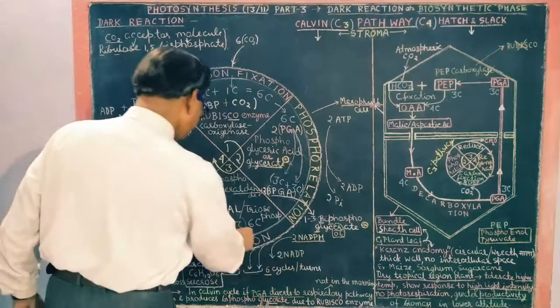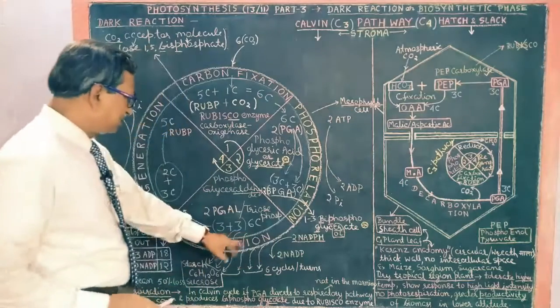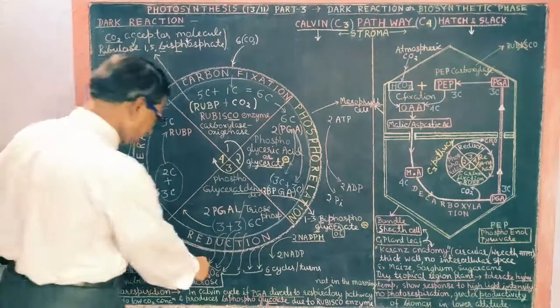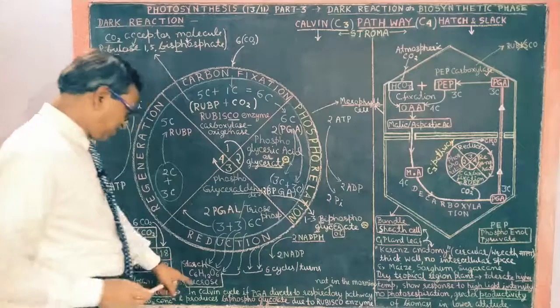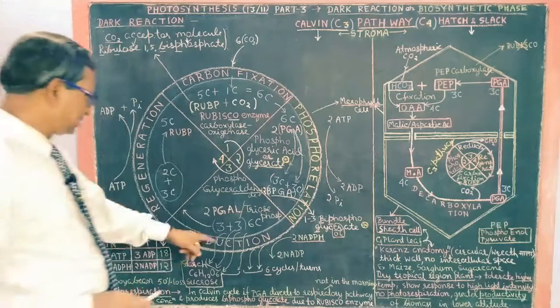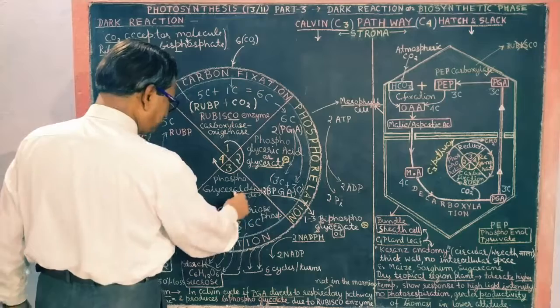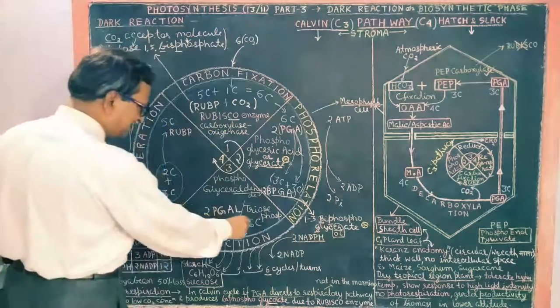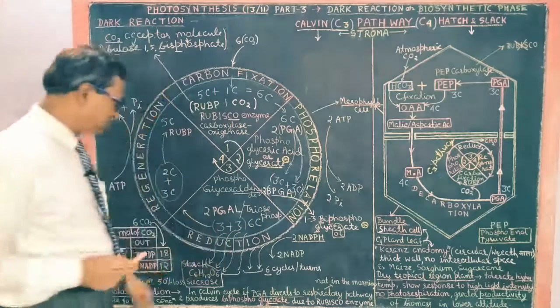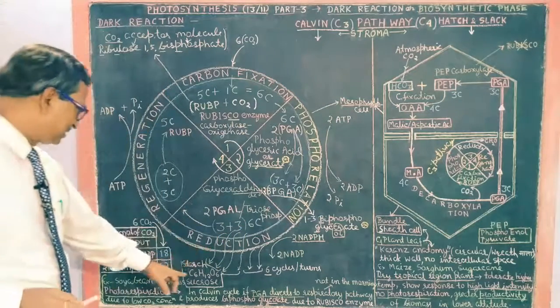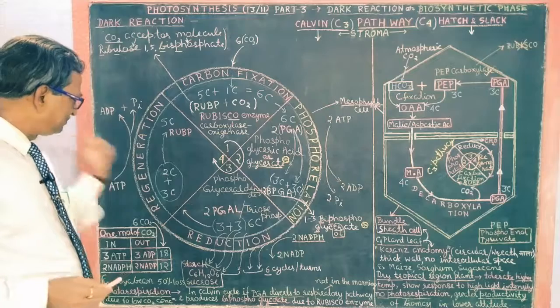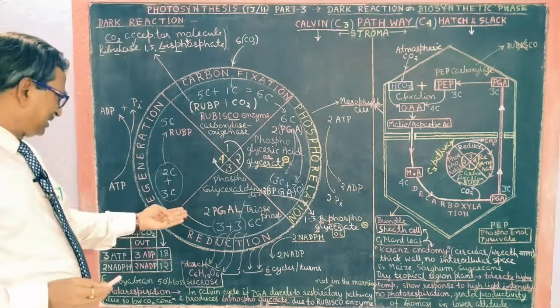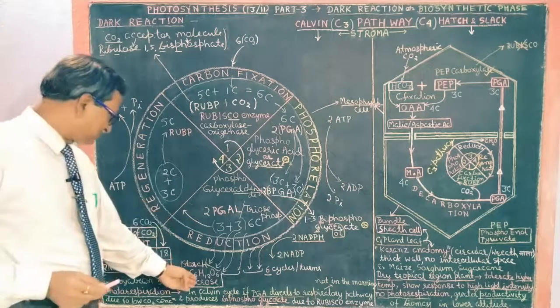So this hydrogen is called reduction, and after the reduction, it becomes starch and sucrose. After the reduction, the bisphosphoglycerate becomes PGAL, which is called triose phosphate, which comes here. After the reduction of PGAL, it becomes glucose and sucrose.